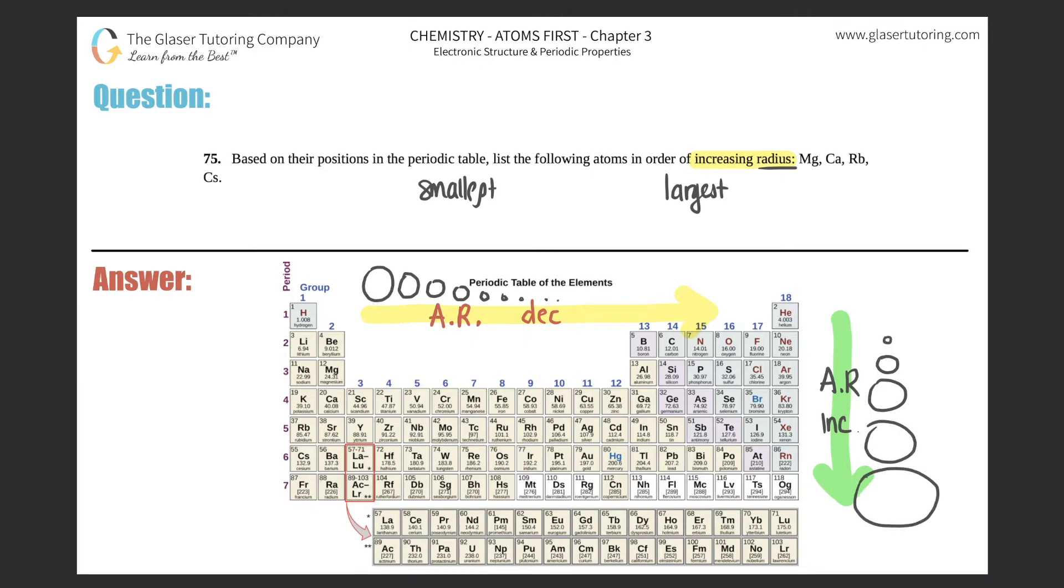Now let's see where these atoms are. We got magnesium over here, calcium right below it, rubidium over here, and then cesium right below it. This one doesn't look too hard.